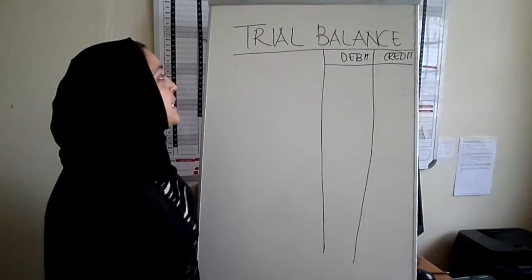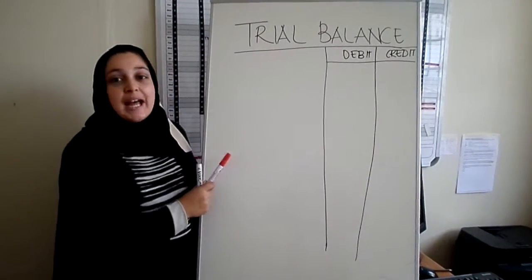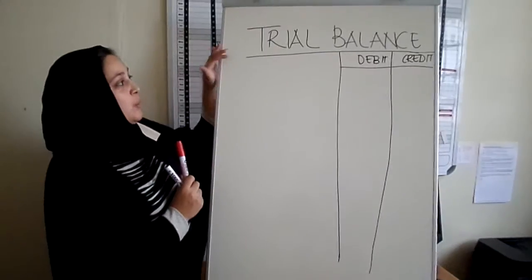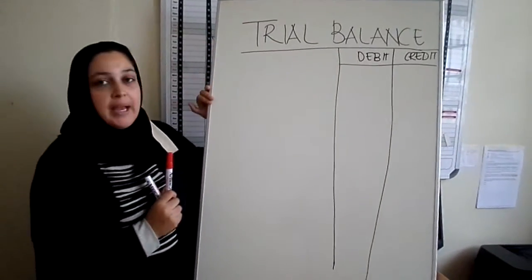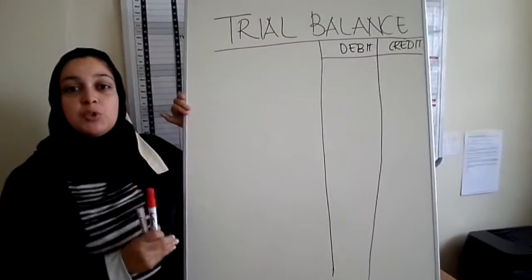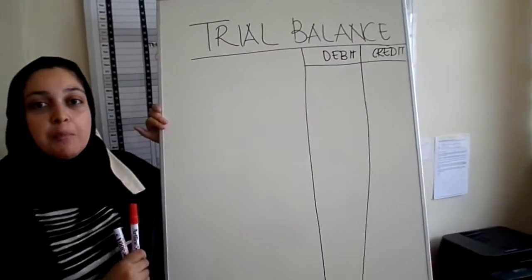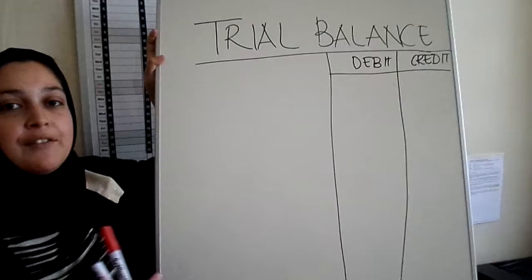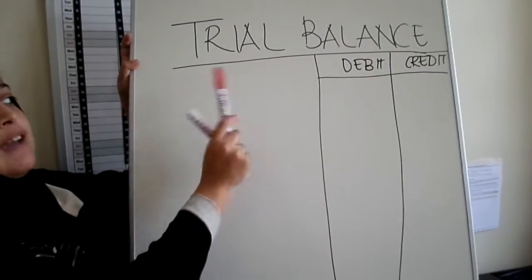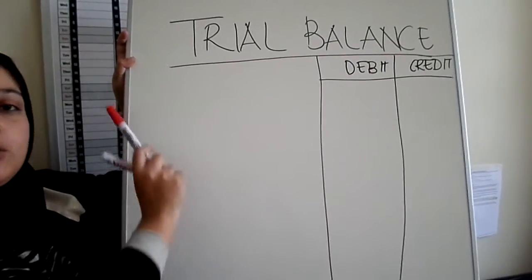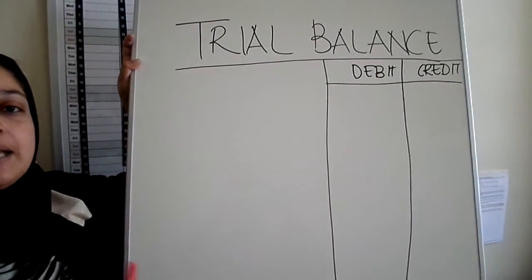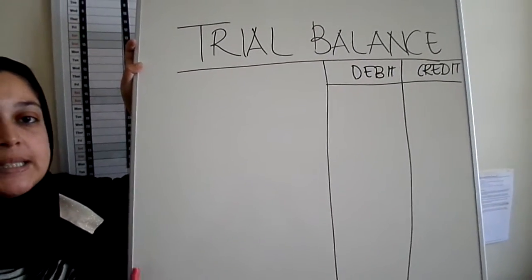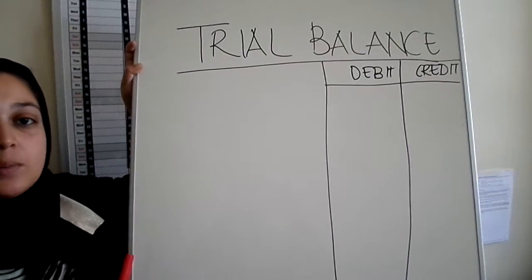Hi guys, today's lesson is about the trial balance. As you know, this is the format of the trial balance which we use for our module. At the top you need to have a heading — you have to say 'trial balance' followed by the name of the business and then the date as well.